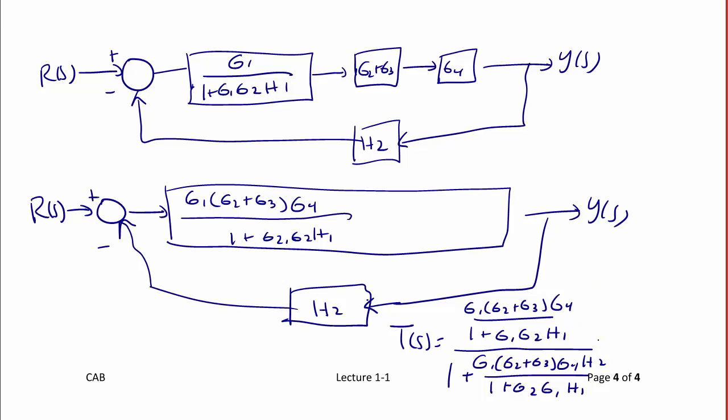And finally, if we simplify all this, in the numerator we have g1 times g2 plus g3 times g4.